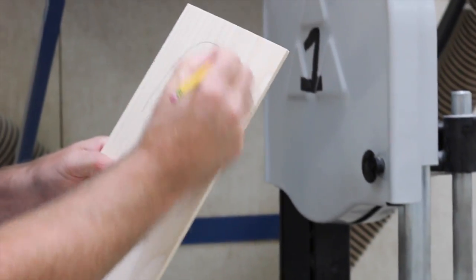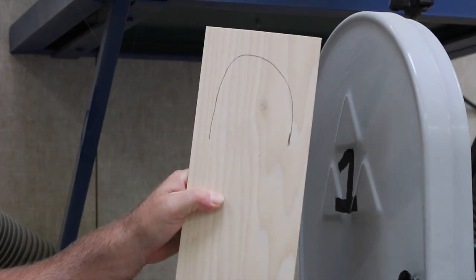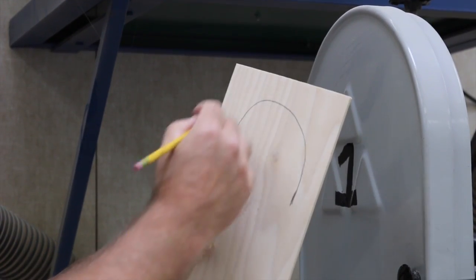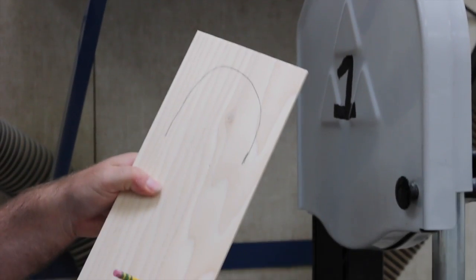When making a curved cut on the bandsaw, I just drew a curved pattern here. There's a special way to do this so the wood doesn't bind up and we don't break the blade. And we call these relief cuts.